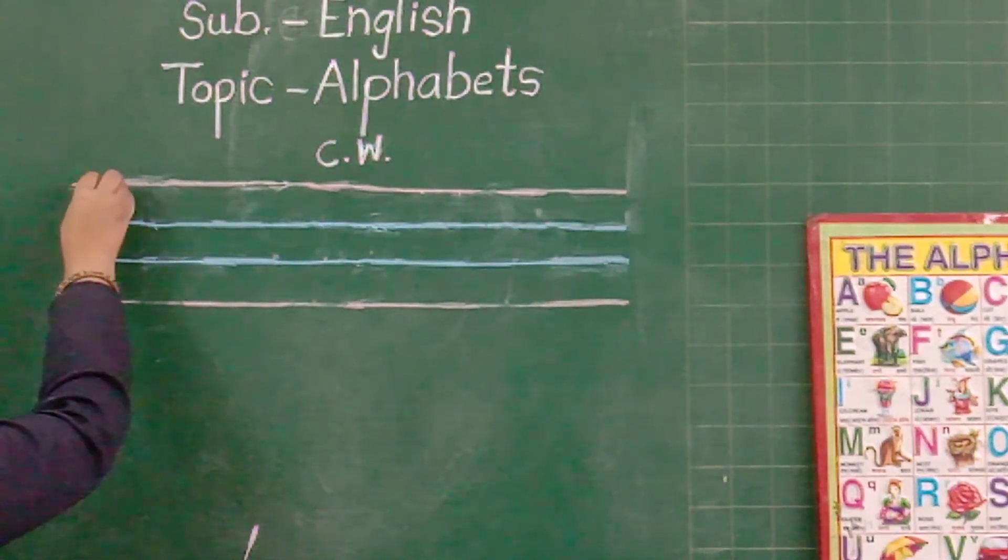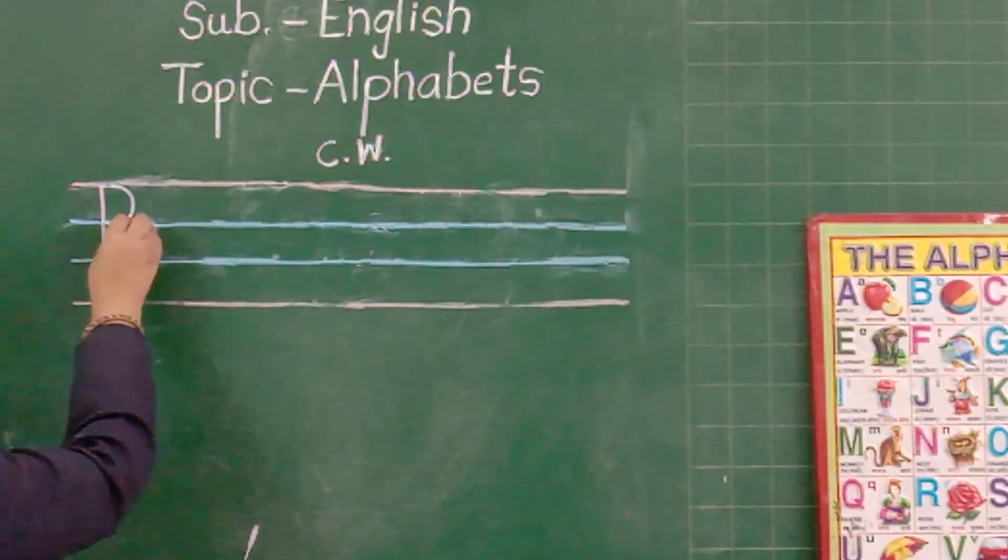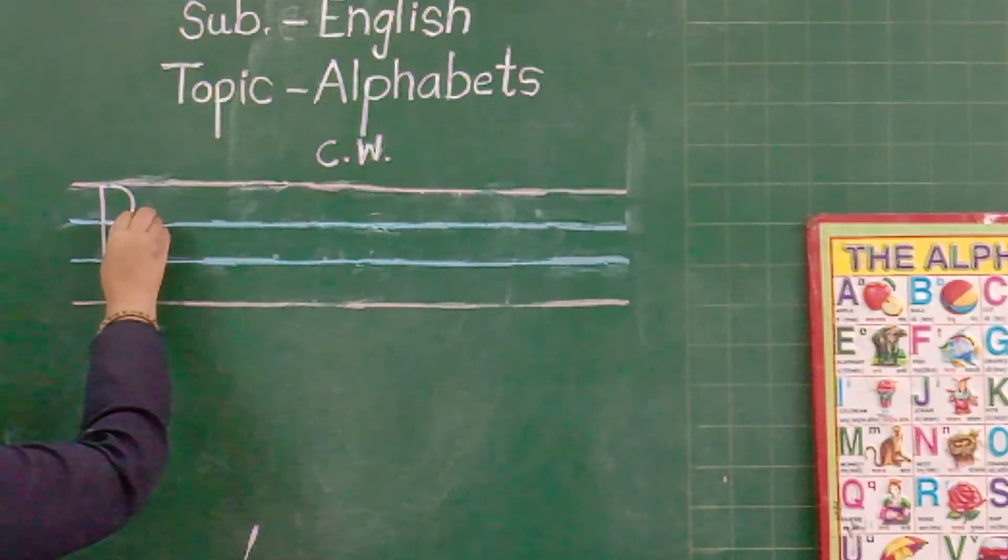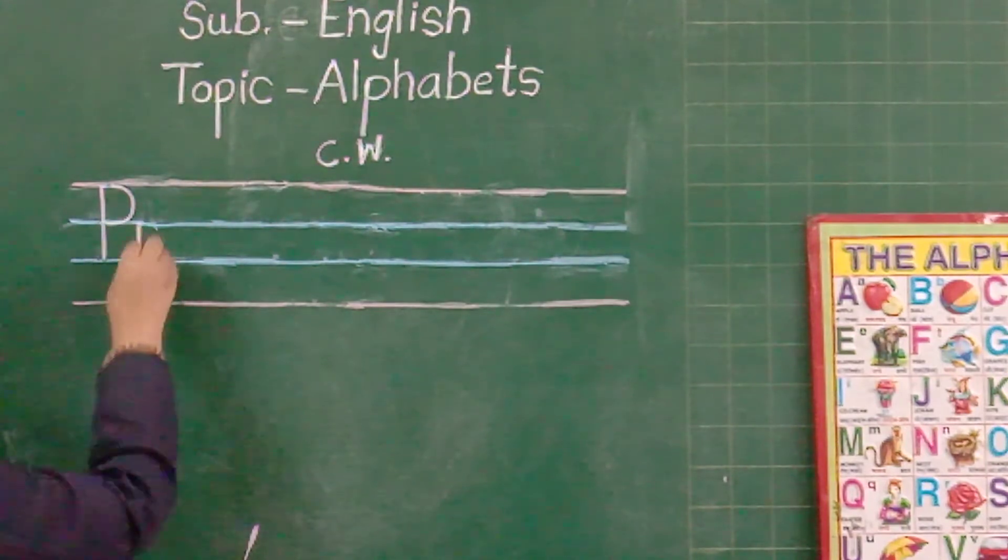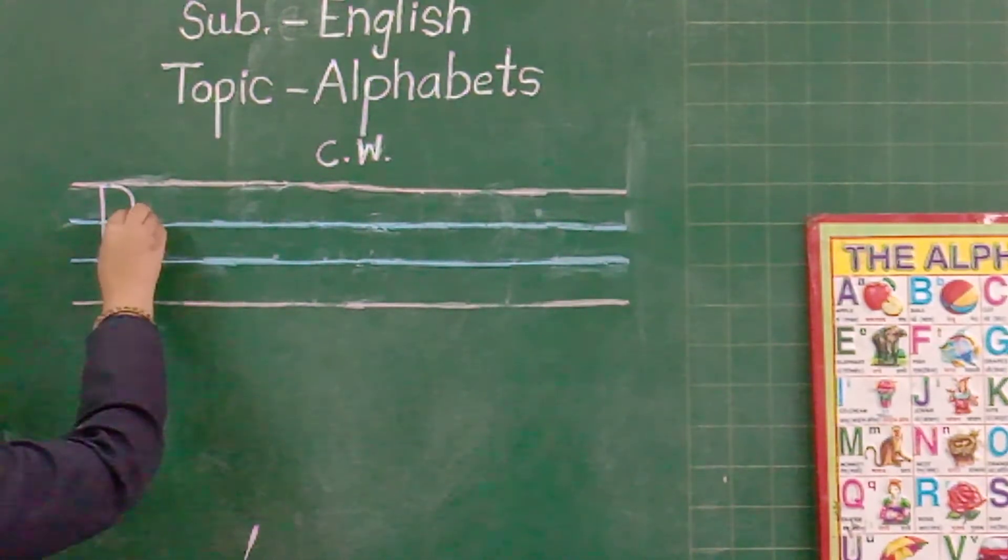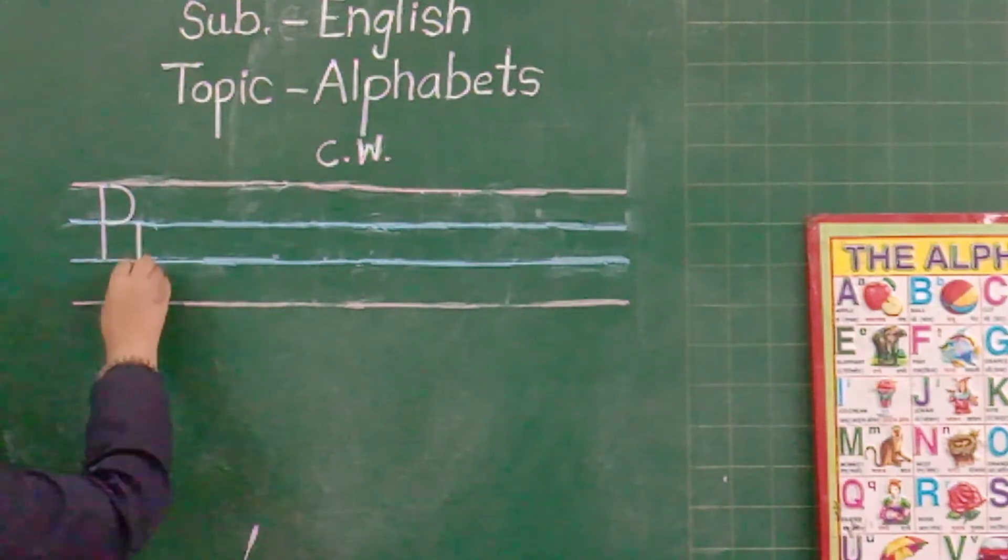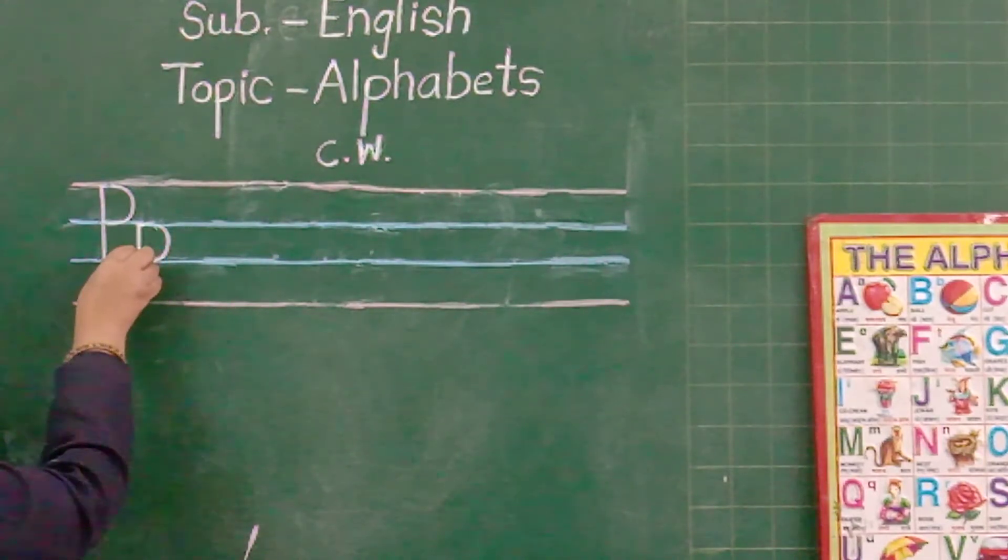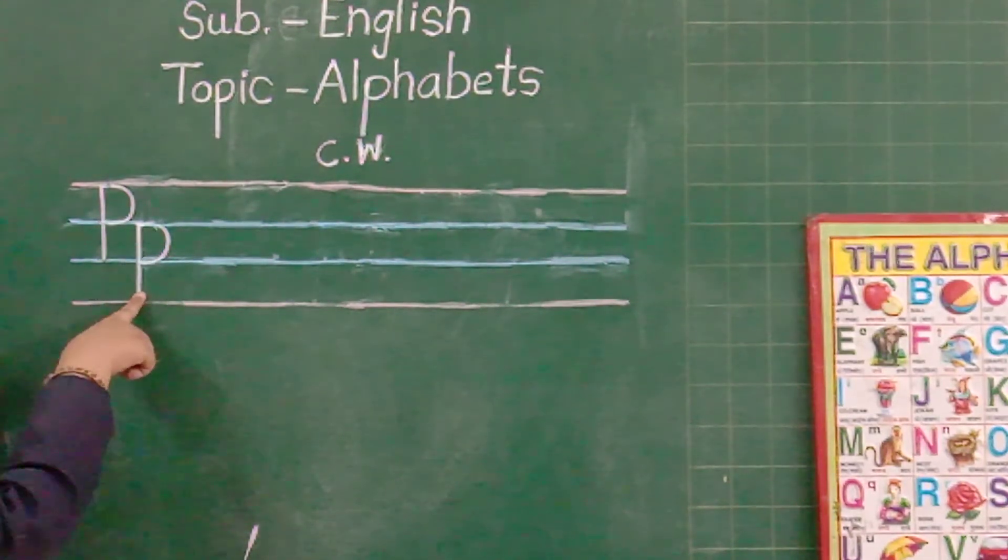P for parrot. P for pigeon. Now look here. From first blue line to second to red line. From first blue line to red line. Right. Standing line. And join from blue line to blue line. Curl. This is small p.